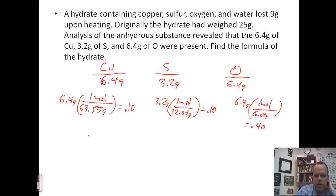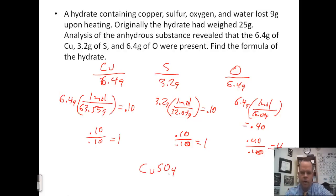Now we're going to divide each by the smallest one. 0.10 divided by 0.10, which will equal 1. 0.10 divided by 0.10, which will equal 1, and 0.40 divided by 0.10, which will equal 4. So the formula of our compound, our anhydrous salt, is CuSO4, or copper(II) sulfate.